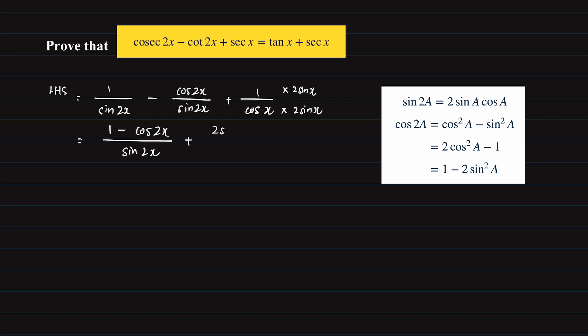So we'll have 2 sine x over 2 sine x cosine x. Now, combining all the fractions together, we will have 1 minus, open a bracket,